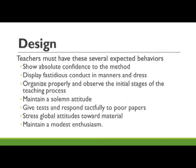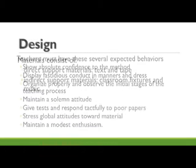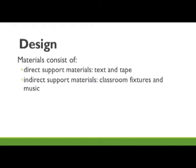Materials in Suggestopedia consist of two types: direct support materials and indirect support materials. Direct support materials are located in the textbook and on tape — now replaced by MP3s. Indirect support materials include classroom fixtures and music. The textbook materials should have emotional force, affecting emotions and imagination, with literary quality and interesting characters.